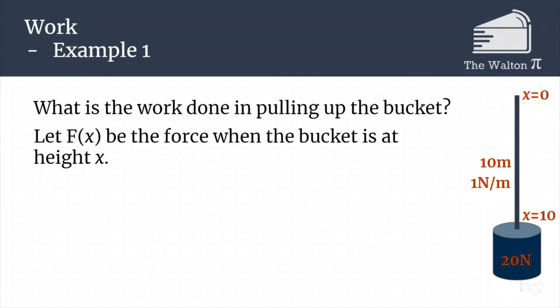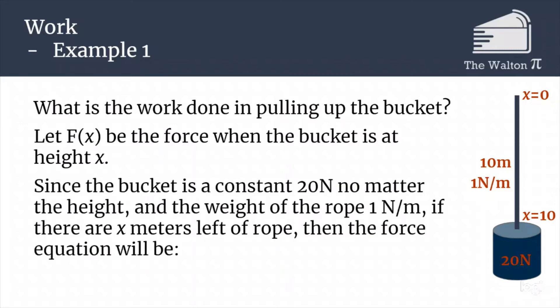Let's let f(x) be the force when the bucket is at height x. We are going to say that x equals 0 is when the bucket is at the top of the well, and x increases as it goes down the well, so that at x equals 10 it is at the very bottom. Since the bucket is a constant 20 newtons and the rope is 1 newton per meter, if there's x meters left of rope, then the force equation is just 20 plus x. We have the 20 newtons from the bucket plus x meters of rope that is also having to be lifted.